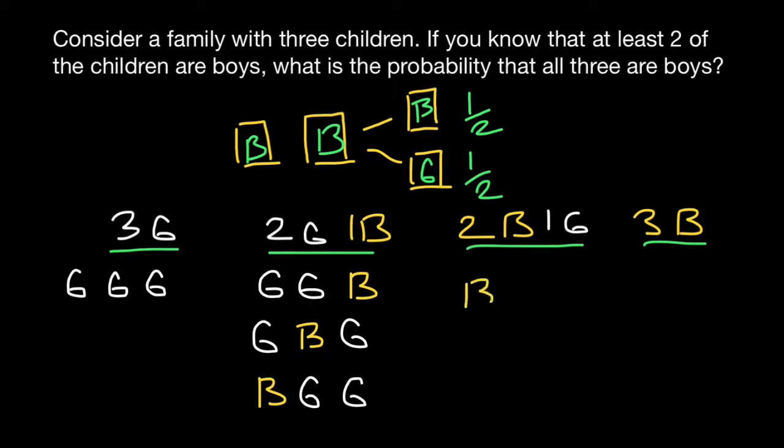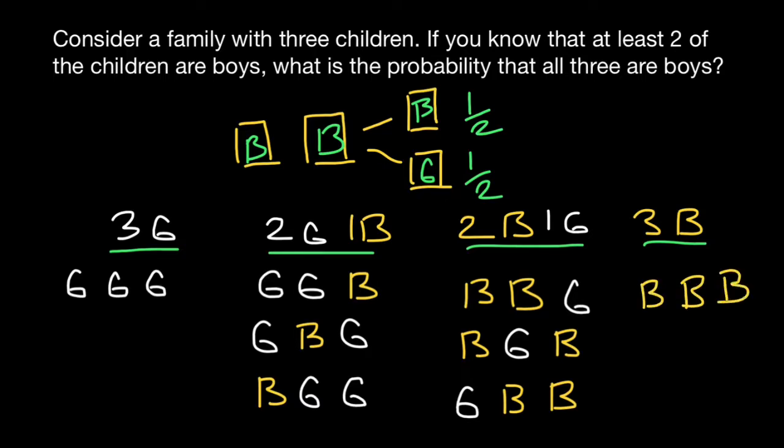There are also three combinations possible for how a family may have two boys and one girl. So the girl can be the last child, or it can be in the middle. And another variant would be when the girl would be the first child in a family. So girl, boy, and boy. And only one combination is possible for how a family may have three boys. Boy, boy, and boy.